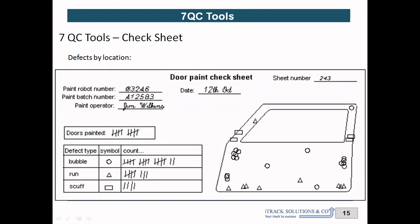The next type is defects by location. This is a check sheet used in an automobile company's painting department, where they paint the door of a car. After painting is completed, they use a check sheet to identify the defect location. When they identify defects like bubbles, scuffed marks, or runs, they want to know exactly where on the door each defect is located — what kind of defect is happening at which location. This is what we call a check sheet to collect data with respect to location.